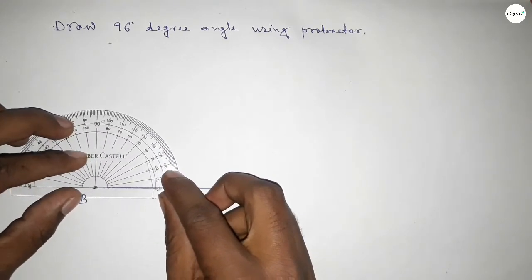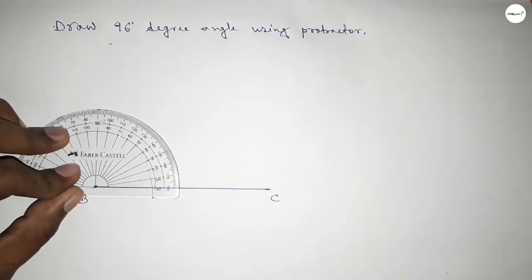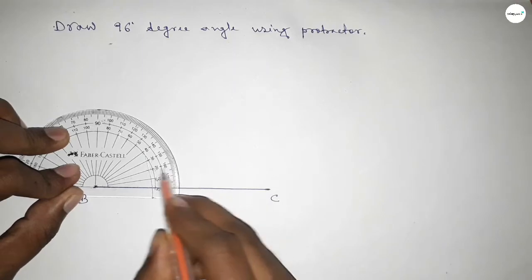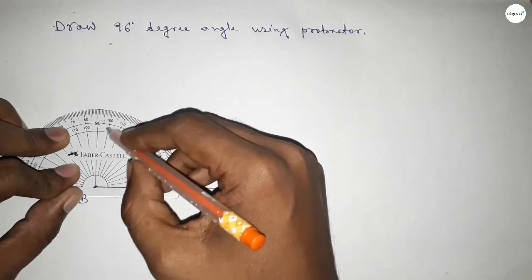Then counting the angles. So this is starting angle 0, 10, 20, 30, 40, 50, 60, 70, 80, 90, 95, and this is 96. So this is 96 degrees.